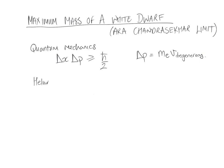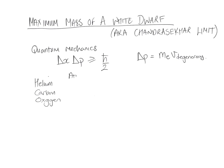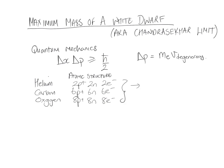White dwarfs are made of helium, carbon, oxygen, or hydrogen. If you remember the atomic structure — the number of protons, neutrons, and electrons — a helium atom has two protons, two neutrons, two electrons; carbon has six of each; oxygen has eight of each. Basically, for all of these elements, for every electron there is two times the mass of the proton worth of mass. So the number of electrons in a white dwarf is the total mass M divided by two times the mass of the proton.